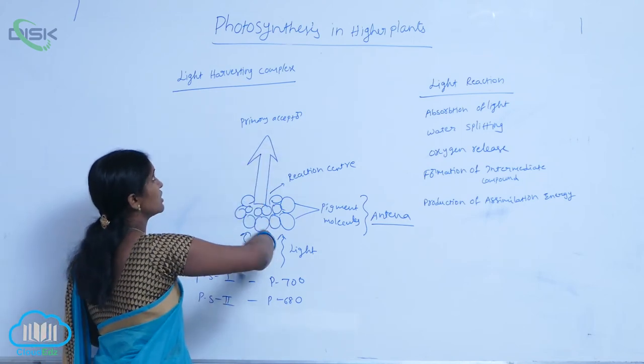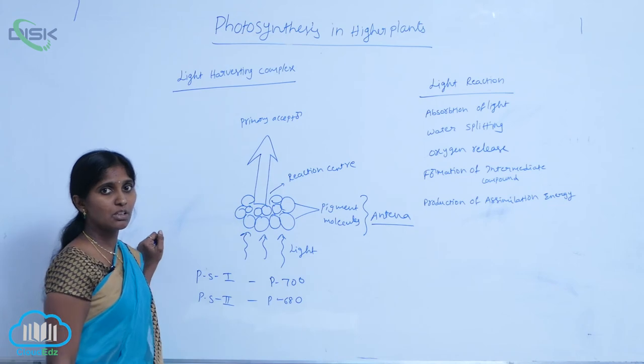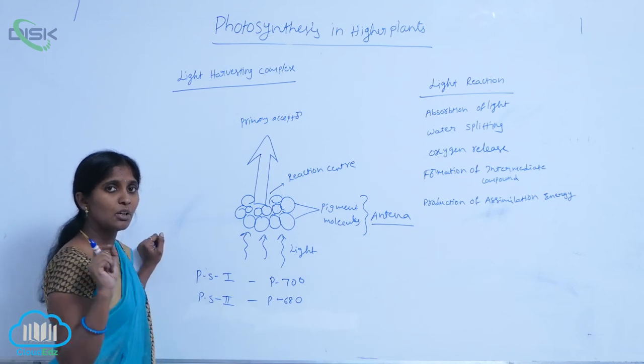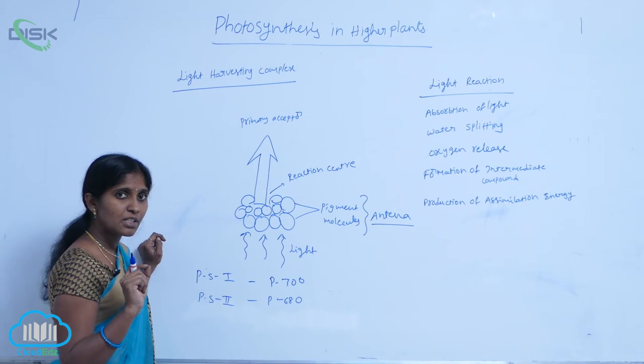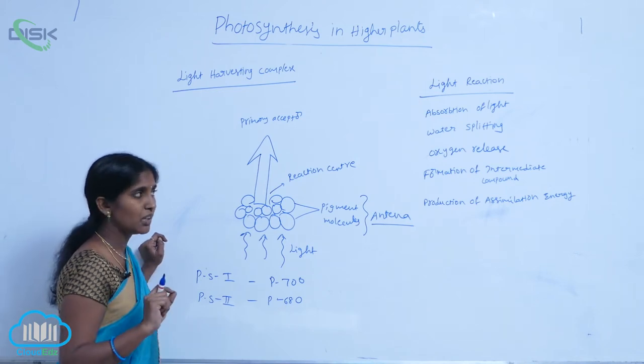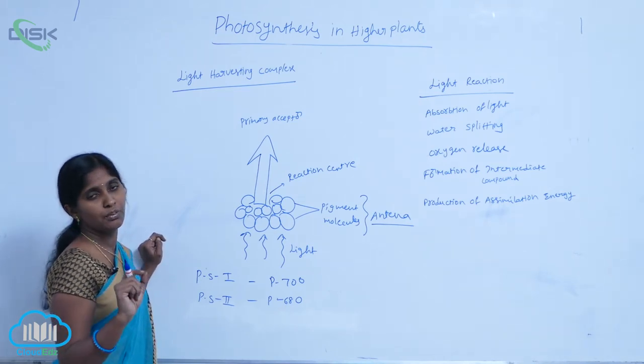This complete structure is called the light harvesting complex. Light harvesting complex includes hundreds of pigments, proteins and the main chlorophyll A.